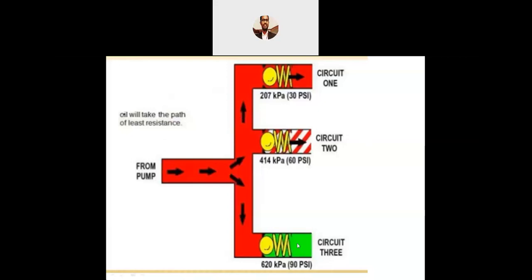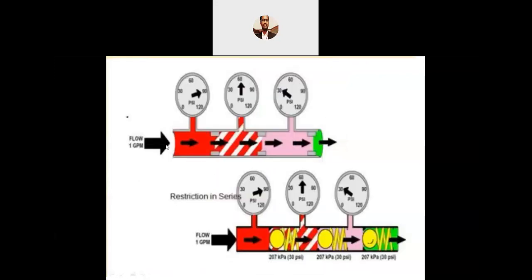From the pump the fluid goes into different circuits — circuit 1, circuit 2, and circuit 3. Two of these are checked and closed, so flow only moves in the open circuit direction. The pressure keeps varying in the different sections, and restrictions in series show different pressure variations across the sections.